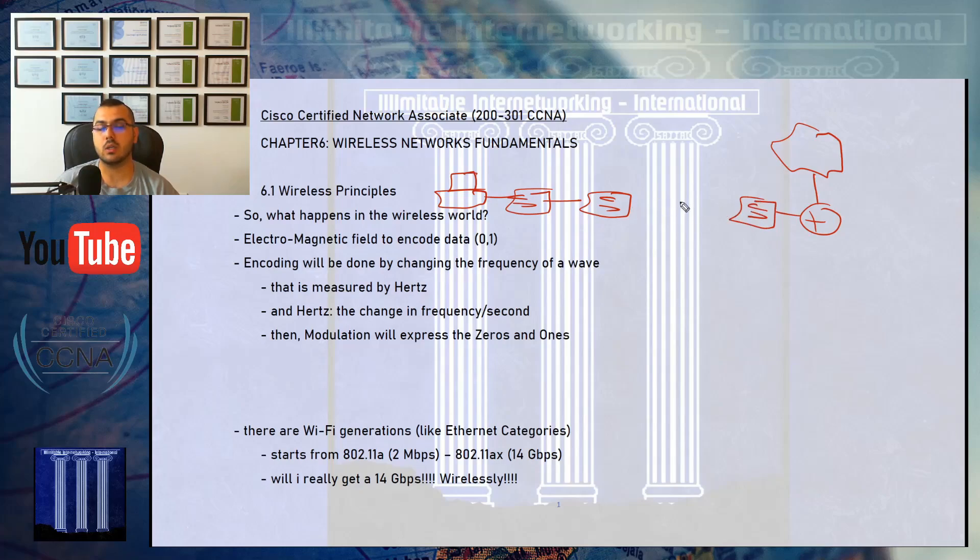The perfect scenario that we used to talk about in all the five previous chapters was like maybe your computer here is connected to a switch that is connected maybe to another switch. This is the router that will connect you to the internet.